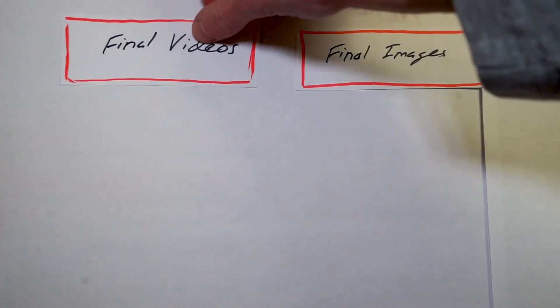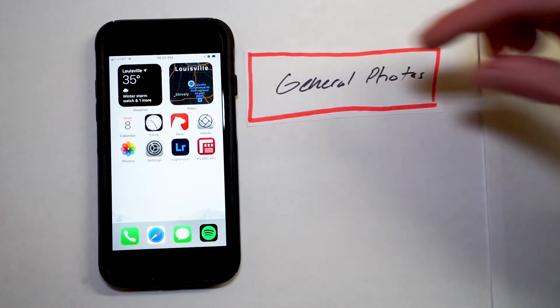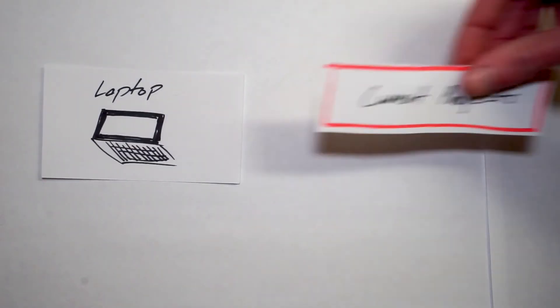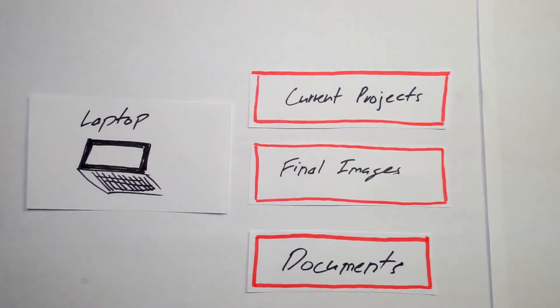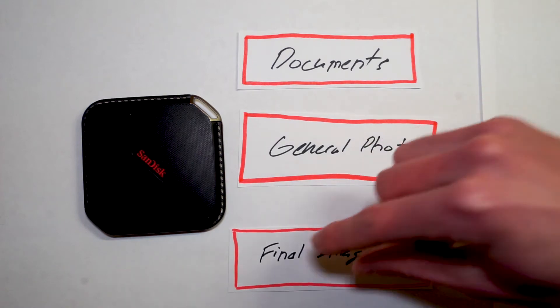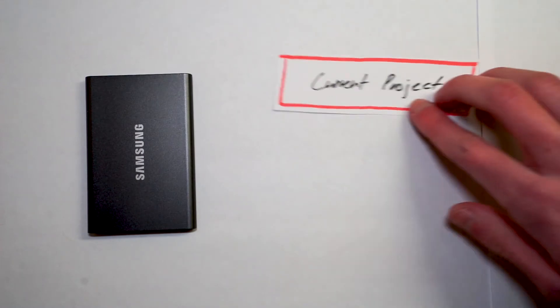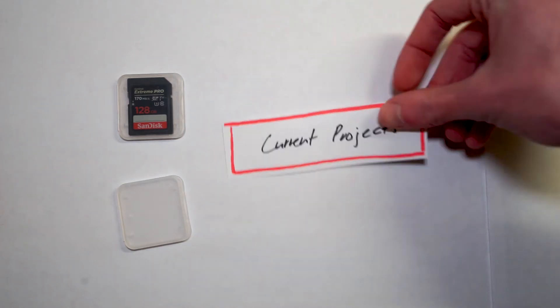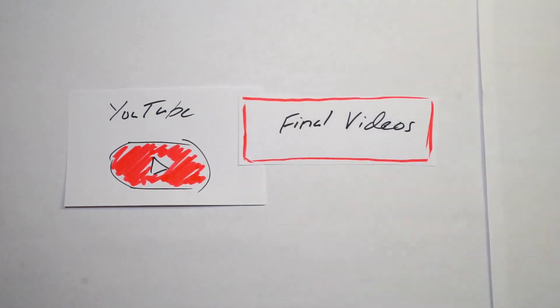The goal is to know where my files are and to protect them. Overall I have five categories: final videos, final images, general photos, documents, and current projects. My iPhone holds general photos, final images, and some media for current projects. My laptop holds current projects, final images, and documents. My 200GB SSD holds documents, general photos, and final images. My 500GB external SSD holds current projects as additional overflow space. My two SD cards — 256GB in-camera and 128GB backup — hold only current projects. I keep all my final videos on YouTube.